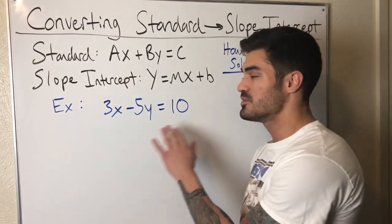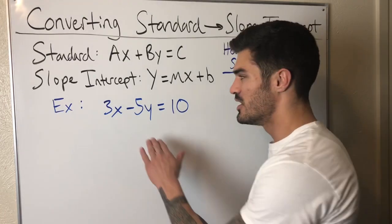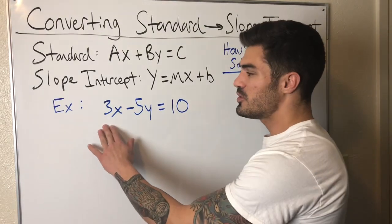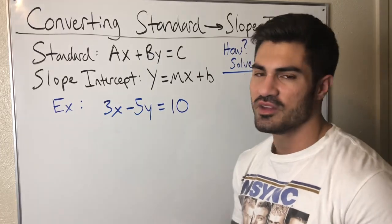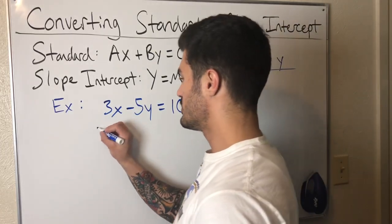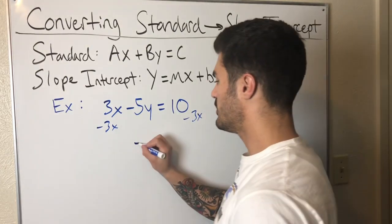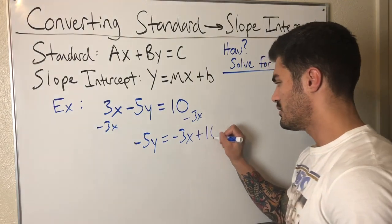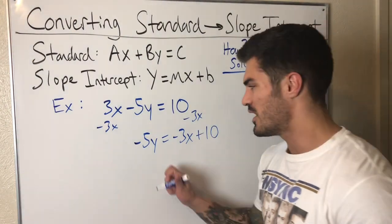Just keep that in mind. You could, for example for this, you could add 5Y to both sides because you could say, oh well I want my coefficient to be positive, or you could subtract 3x from both sides and then just end up dividing by -5, and that's what I would personally do. So I'm going to subtract the 3x from both sides and I'm left with -5Y = -3x + 10.